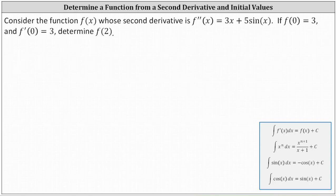Consider the function f of x whose second derivative is f double prime of x equals three x plus five sine x. If f of zero equals three and f prime of zero equals three, determine f of two.